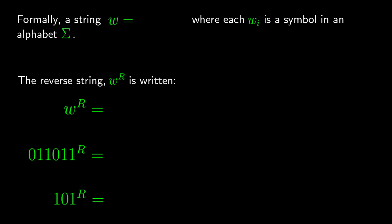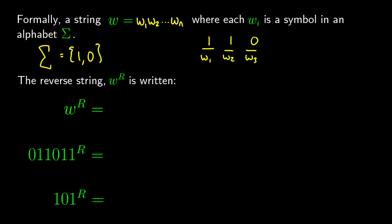Formally, we define a string w by its position. We say the first symbol is w₁, the second is w₂, and this goes on for a finite number of symbols, with the last being wₙ. This is positional notation, not multiplication. So if we had 1, 1, 0, the first is w₁, the second is w₂, and the third is w₃. Importantly, each symbol in a string must come from our alphabet — if our alphabet is {0, 1}, an 'a' or any other symbol would make it invalid.